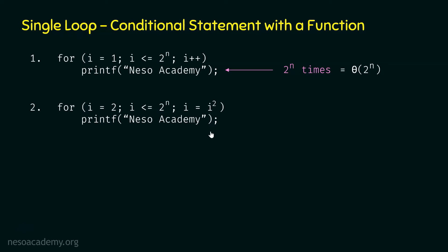Let's take one more example. This time we have a loop where the initialization statement is i equal to 2, the conditional statement is i less than or equal to 2 power n, and the update statement is i equal to i squared. We have a conditional statement with a function, but this time with a different initial constant and i squared in the update statement.